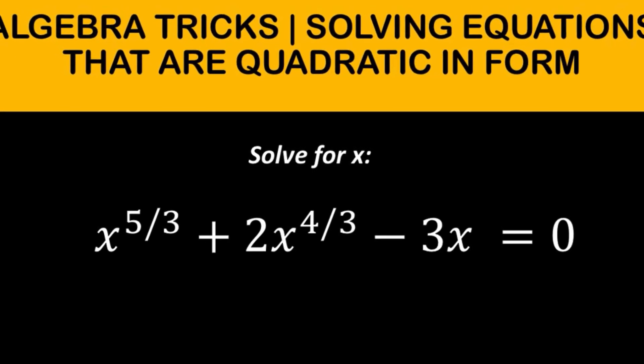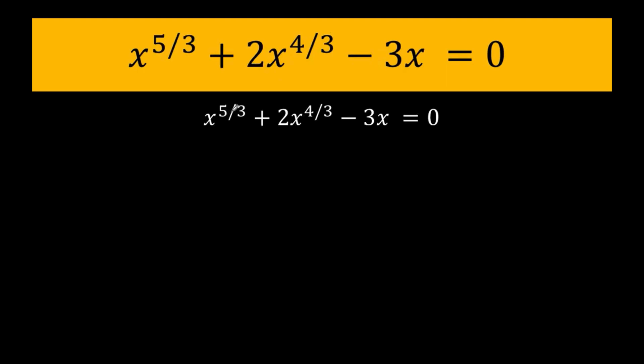Find the value of x. Notice that we have here an improper fraction 5 over 3 which can be written as a mixed number, 1 and 2 thirds. Also, this fractional exponent 4 over 3 can be written as 1 and 1 third.